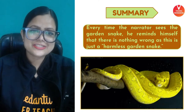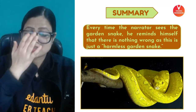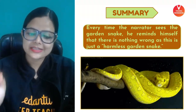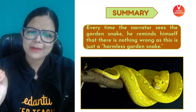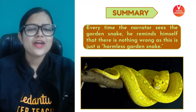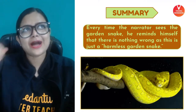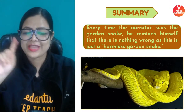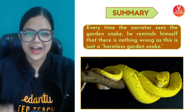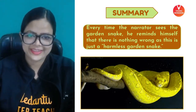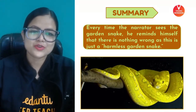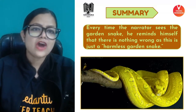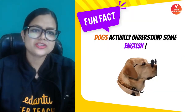So this is the chapter. Every time the narrator sees a normal garden snake, he reminds himself that these snakes are not harmful. And that is the key lesson of this poem.